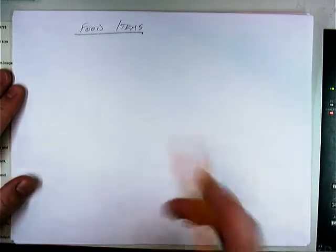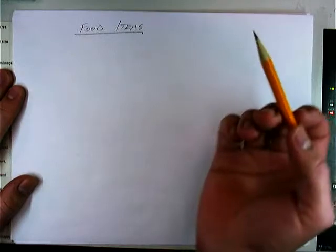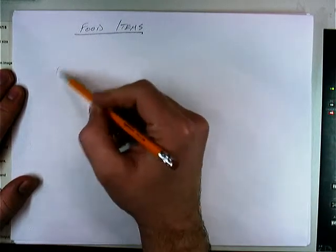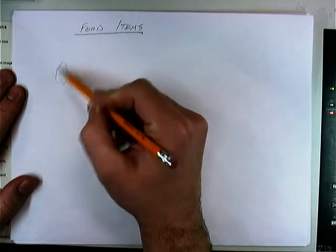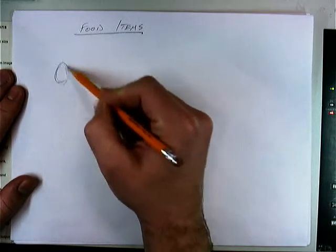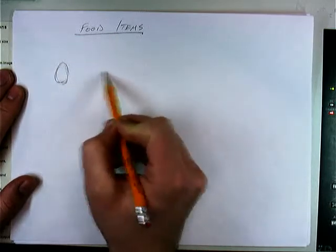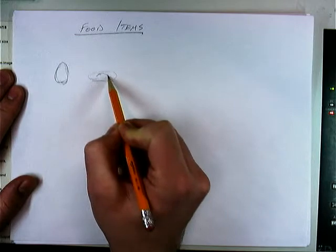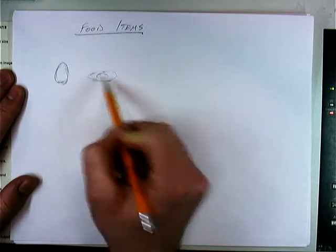So this is sort of a kind of brainstorming. Food items — what is the first thing that comes to my mind? Well, it's an egg. I'm going to sketch an egg like this, but you know, that's not usually how we think of an egg. Oftentimes when I think egg, I think like a fried egg or something like that. So there's like a yolk like this.